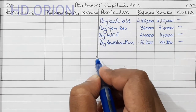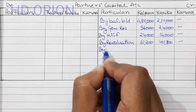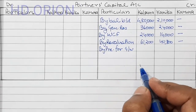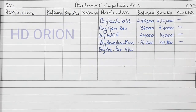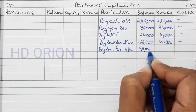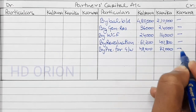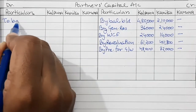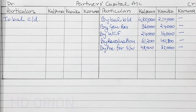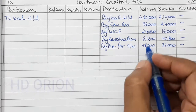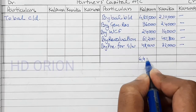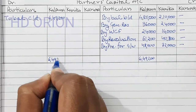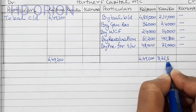Now Karuna is bringing goodwill, so by premium for goodwill. Premium for goodwill is 80,000. So 80,000 will be divided in sacrificing ratio: 48,000 and 32,000. Then calculating closing balances — grand total is 6,49,200 for Kalpana and 3,22,800 for Kanika.